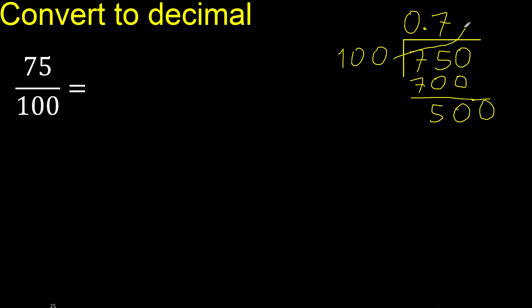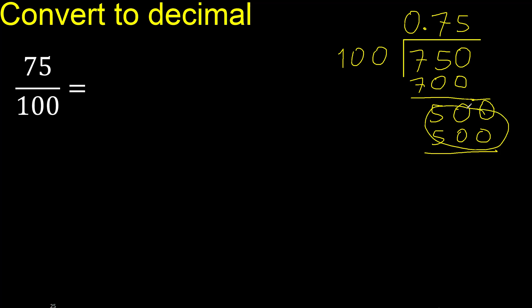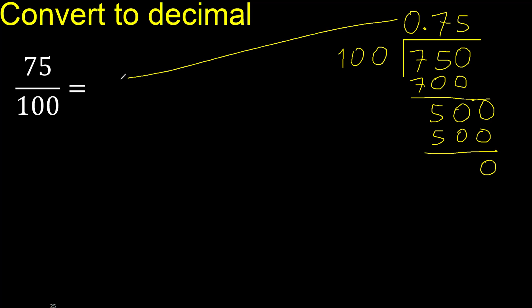100 multiplied by which number? Multiplied by 5 is 500. Subtract — 0. Therefore finish.